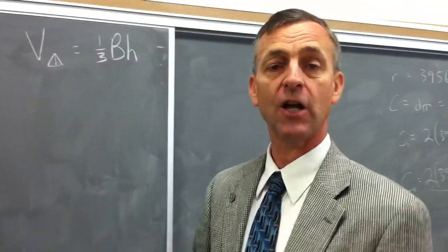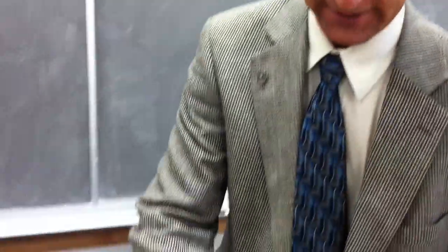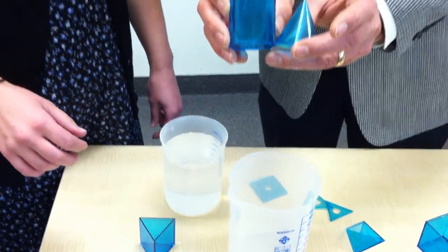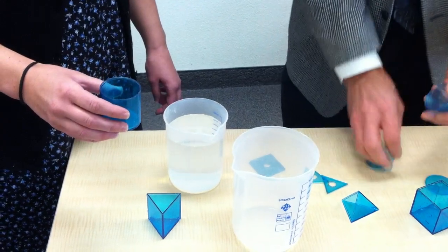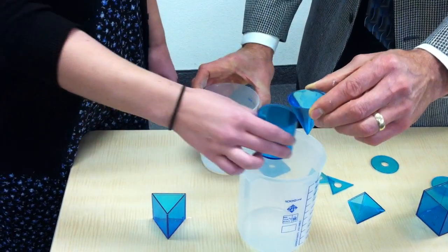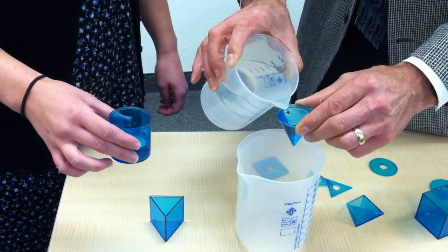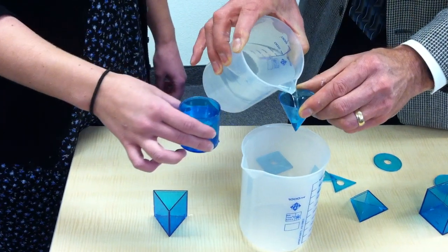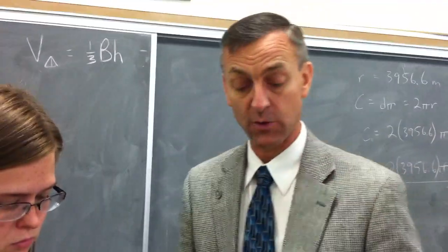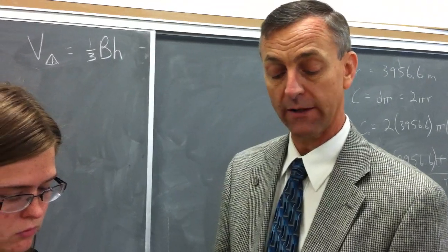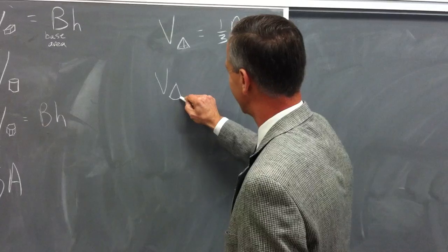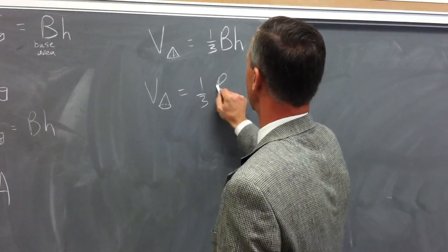But is that true for this object? We have a cylinder and a cone with the same base area and identical heights. Does this relationship hold for cones and cylinders as well? One cone into the cylinder, two cones, and three cones into the cylinder. Yes — it appears that anything that comes to a point contains exactly one-third of what it would have contained had it gone straight up.